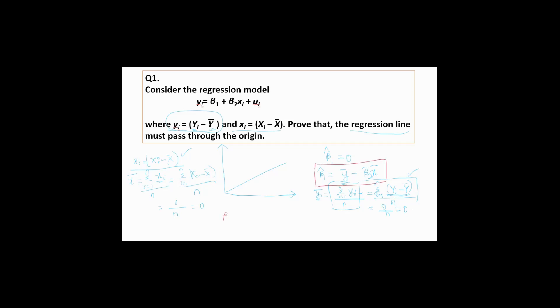So if you put this, then that means β₁ cap will be ȳ bar equal to 0 minus β₂ cap - we don't know about it, but we can just keep it - then we have x̄ bar, which is also 0, right? So if you see, then it becomes 0. That means your β₁ cap, that is your intercept, is 0. So this regression line will pass through the origin.